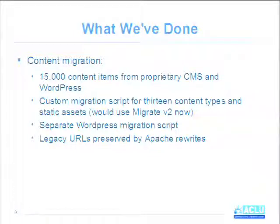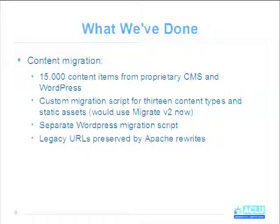I'm going to talk about a couple of other things we did in the initial build. One of the biggest challenges of moving to any platform is content migration. In this case, we had about 15,000 content items that were mostly on the proprietary CMS that the ACLU was on before we got involved. There was also some content in a separate WordPress installation they used for their blog. So for this build, we created a custom migration script to bring in 13 content types and then also various static assets like files, images, and media.